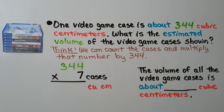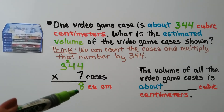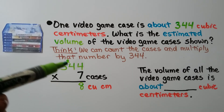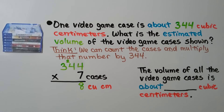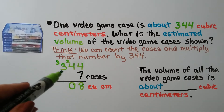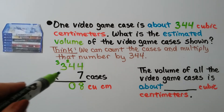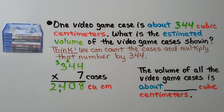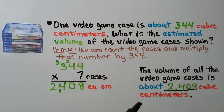Now we multiply 344 times 7. 4 times 7 is 28, regroup the 2, put the 8 down. 7 times 4 is 28, plus 2 is 30. 7 times 3 is 21, plus 3 is 24. We get 2,408. The volume of all the video game cases is about 2,408 cubic centimeters.